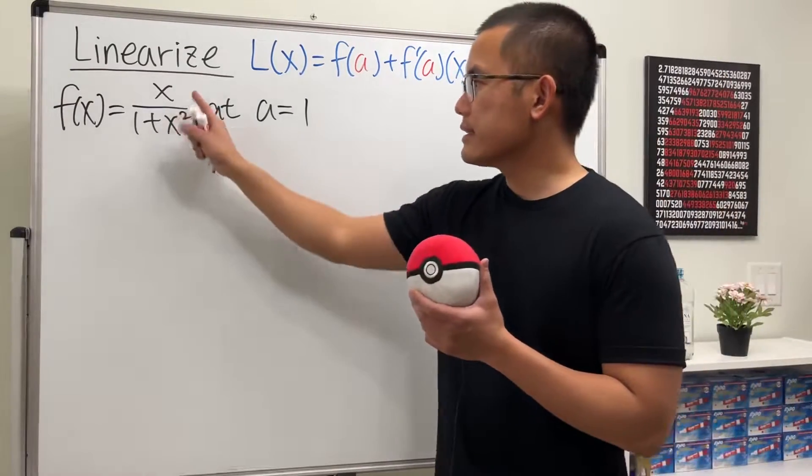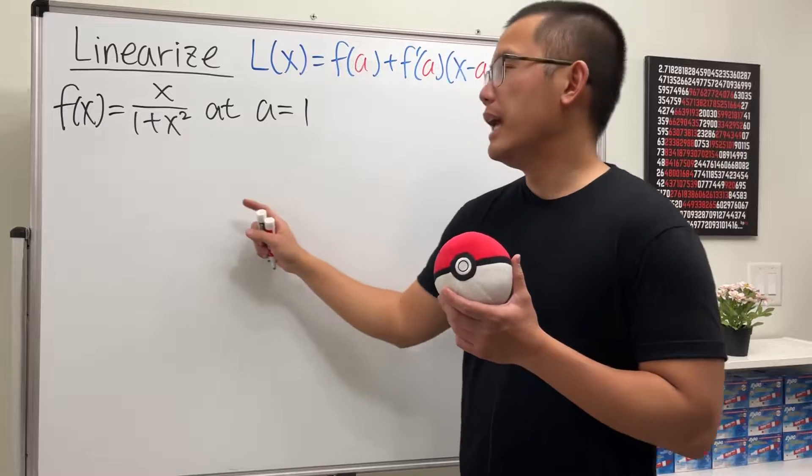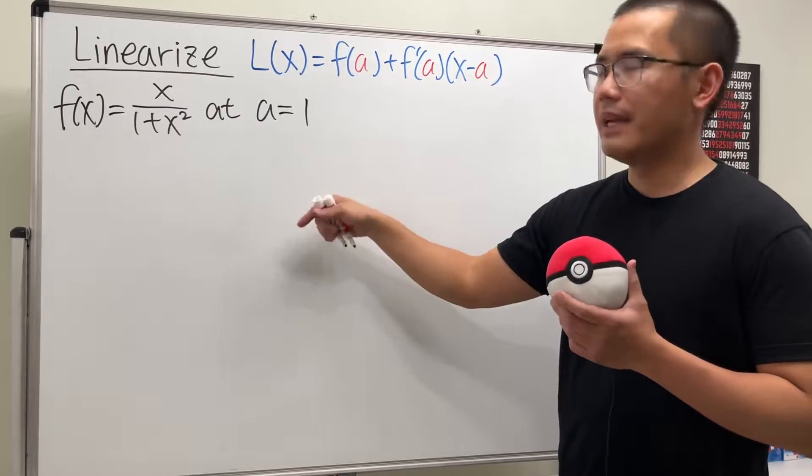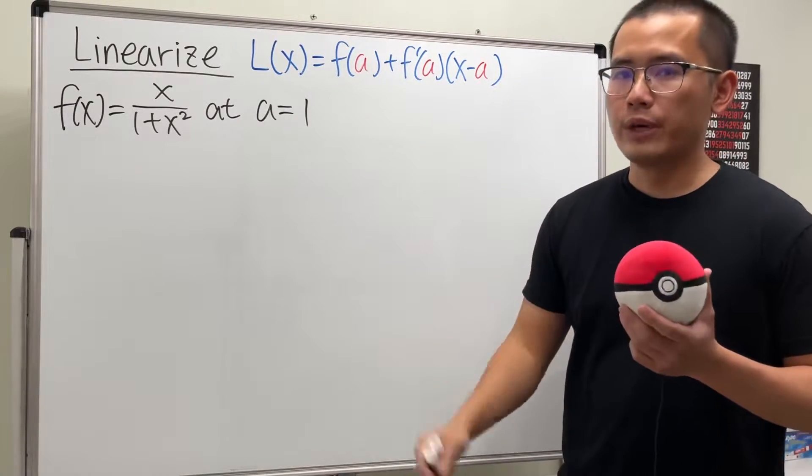Okay, we are going to linearize the function x over 1 plus x squared at the a value 1. And here we have the formula already. Let's go ahead and get to work.